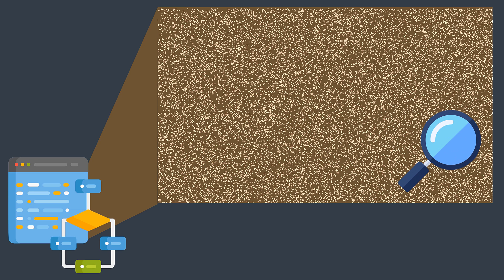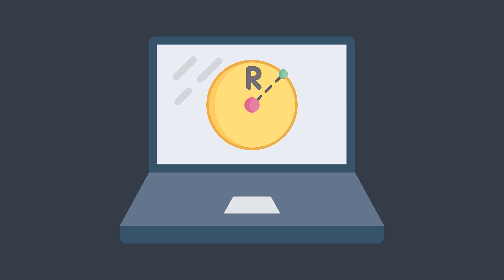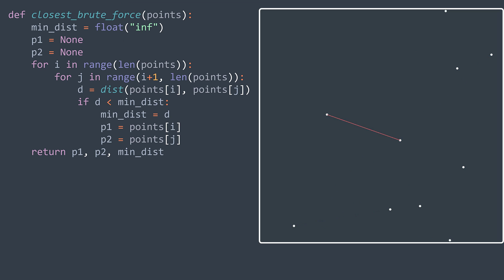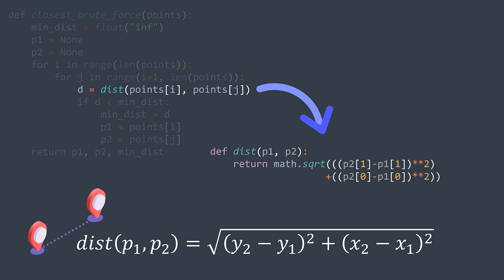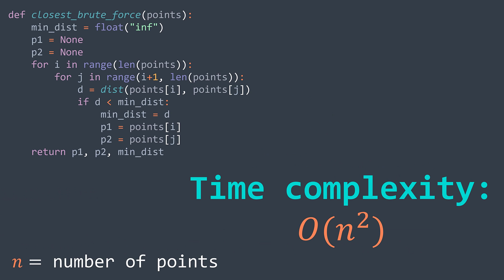The closest pair of points problem is a computational geometry problem: given a set of points, we want to find the closest pair. The first solution that comes to mind is the brute force solution — test every possible pair of points while keeping track of the closest one. The distance between two points is calculated using the Euclidean distance formula: √((y2−y1)² + (x2−x1)²). But this solution is slow; it has an O(n²) time complexity because of the nested for loops.